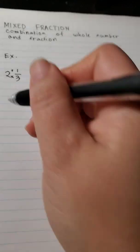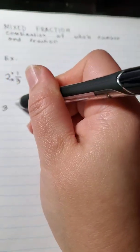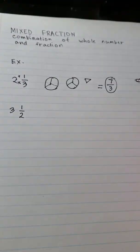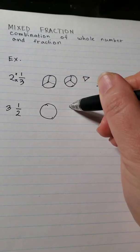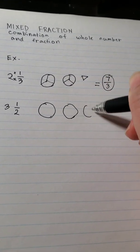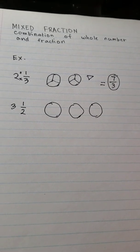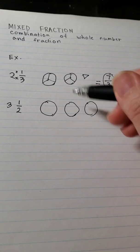Another example, 3 and 1/2. So we're going to draw 3 circles, 1, 2 and 3. This represents the whole number.